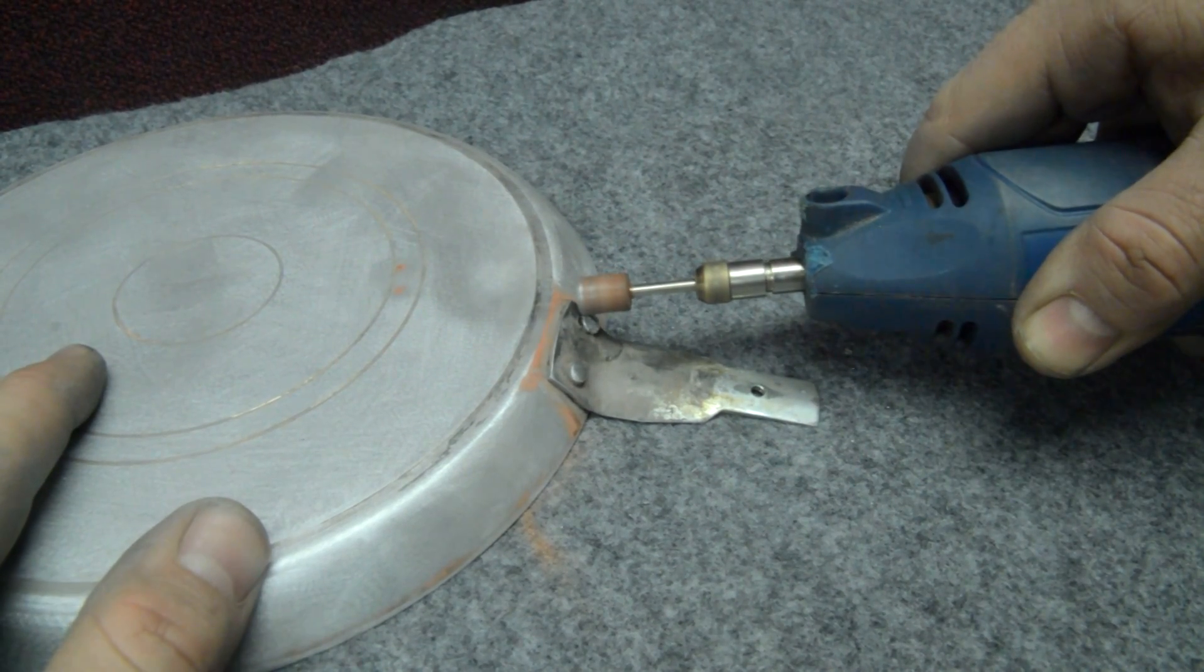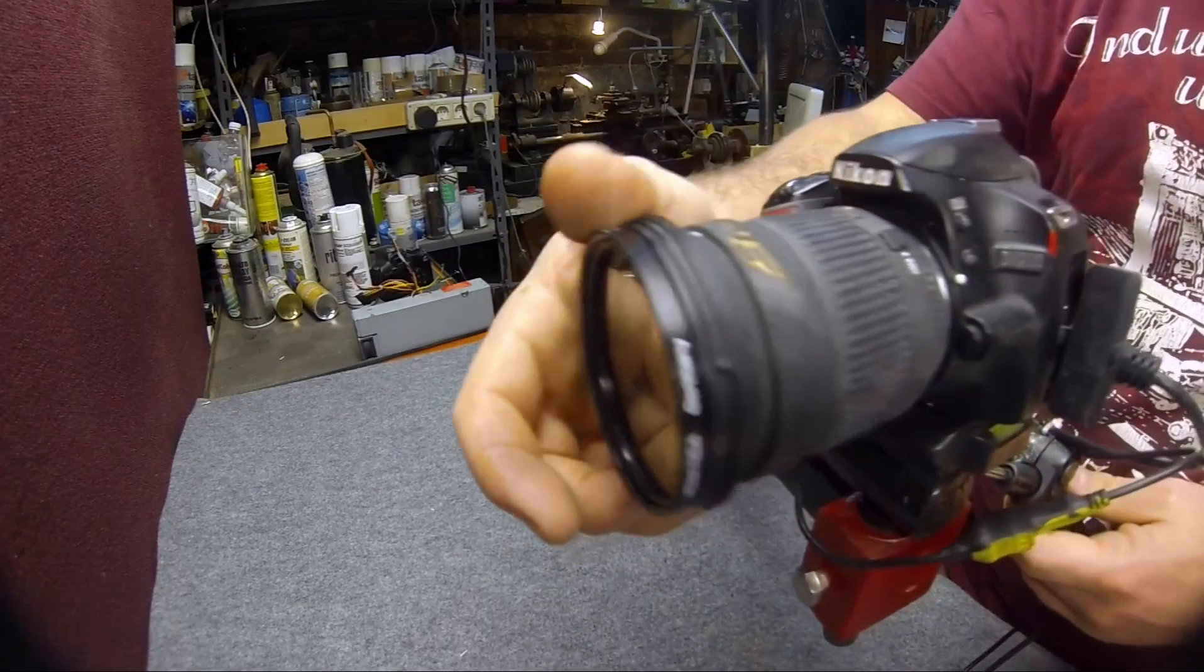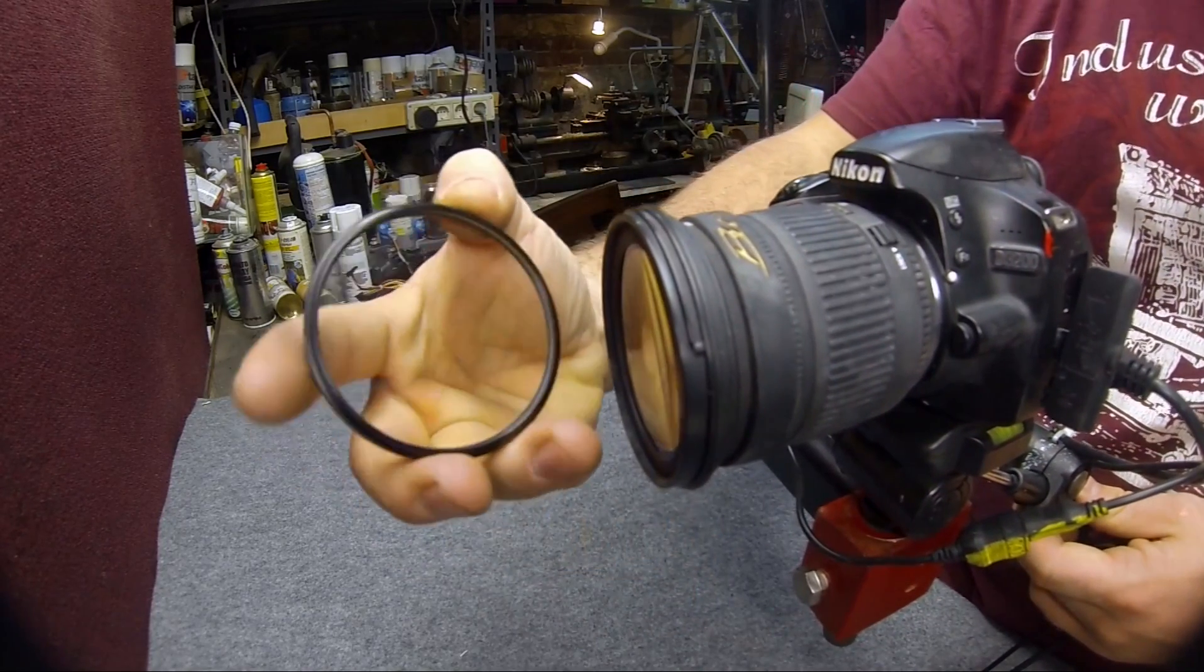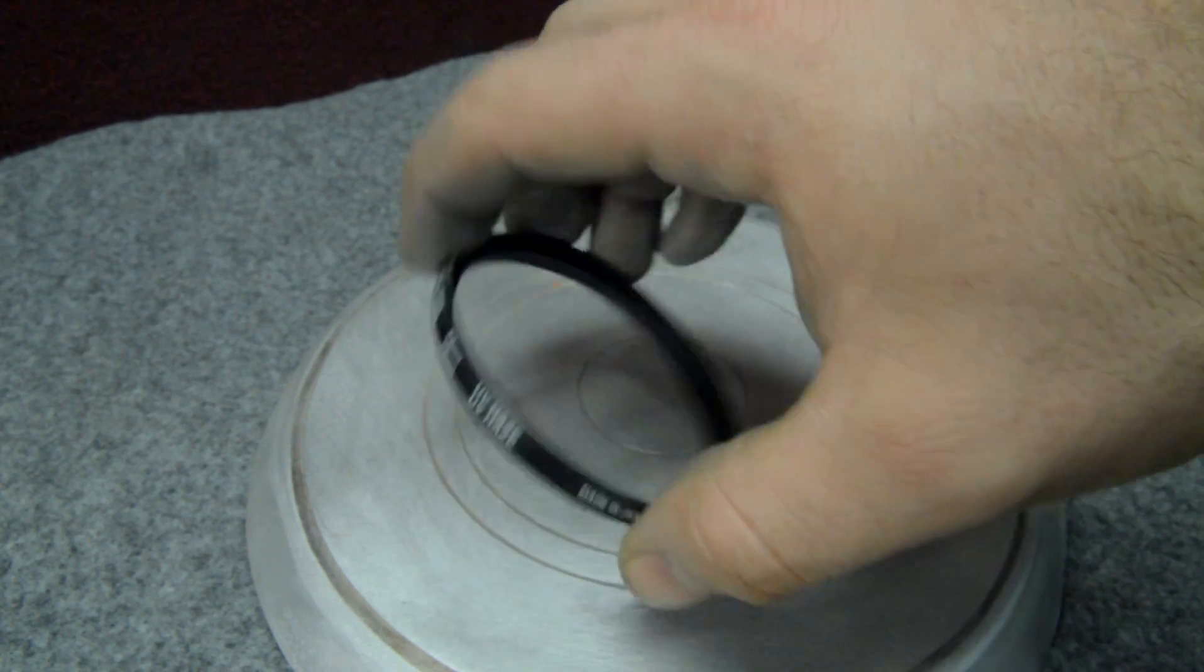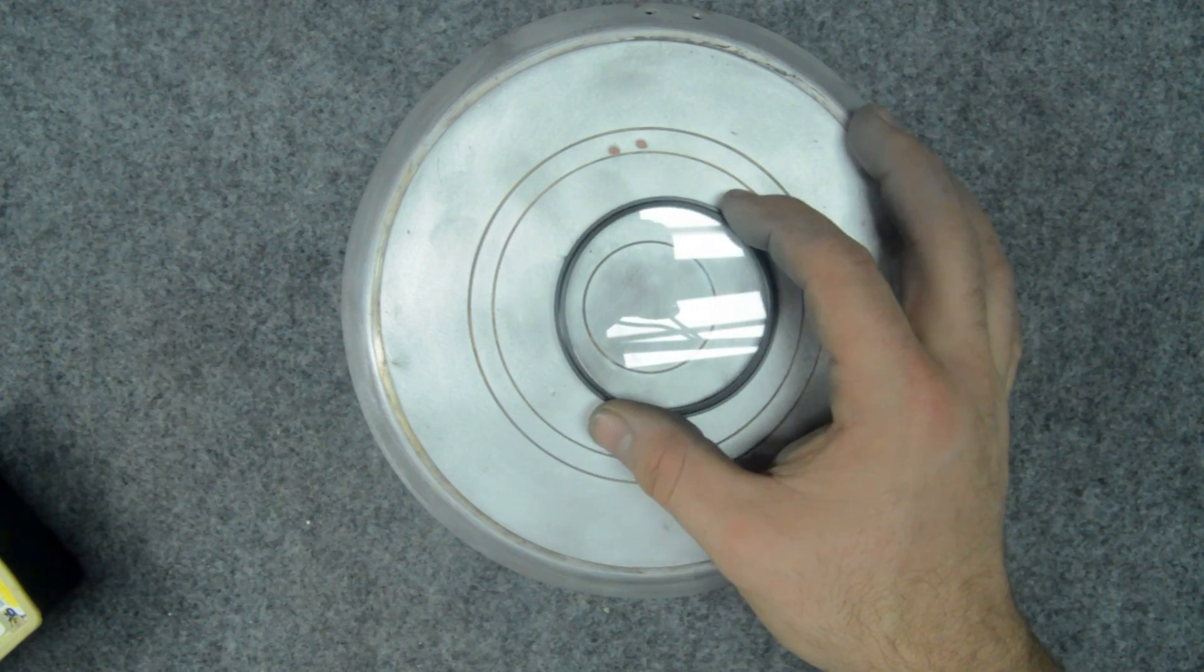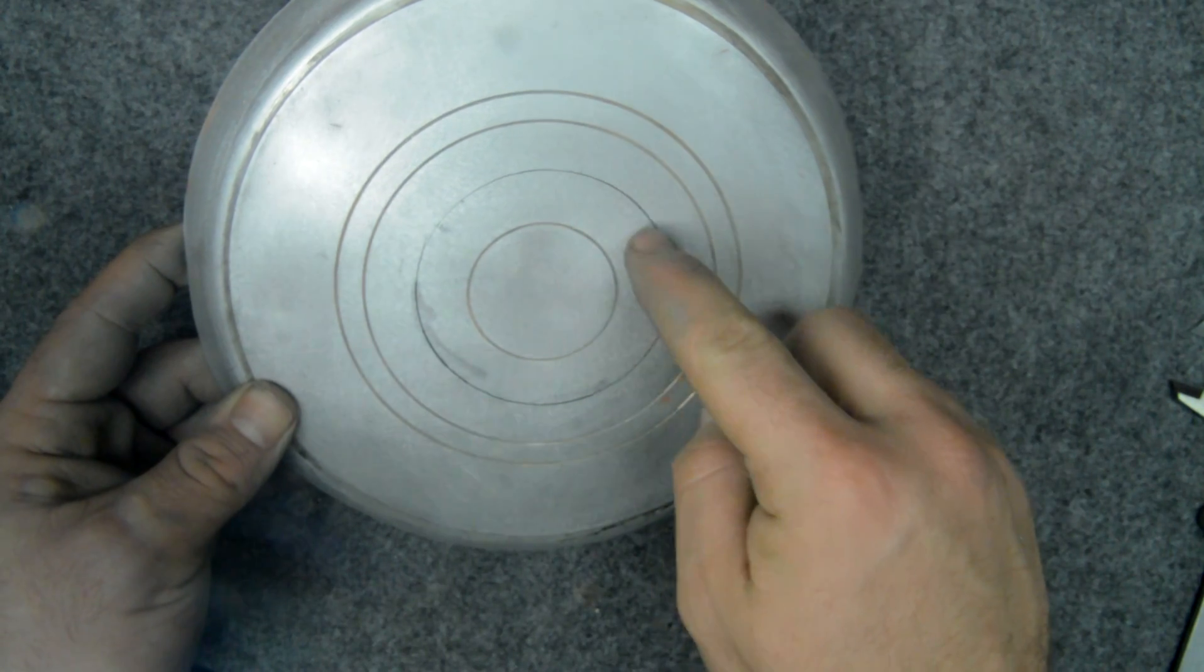I screw away now a filter in front of my camera lens. These filters are very cheap and I need to place it in the middle of the pan. I use a pencil to trace the shape of this filter all around.